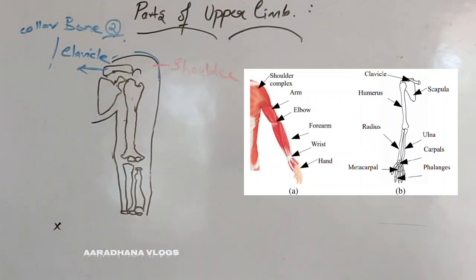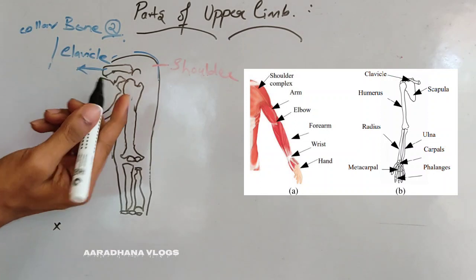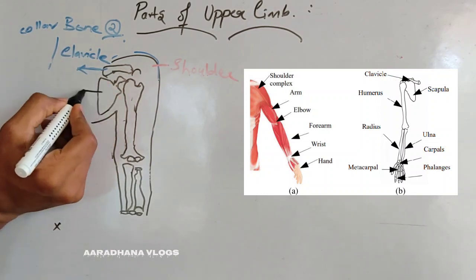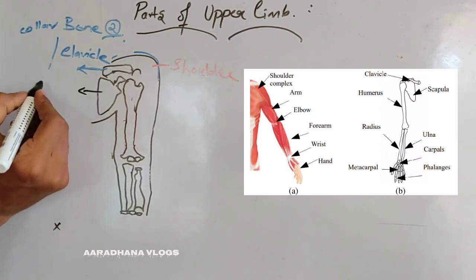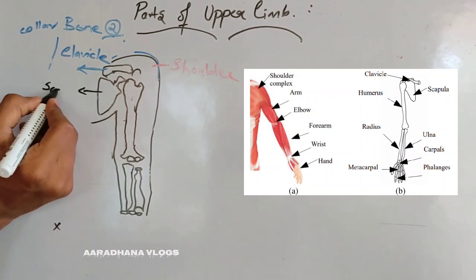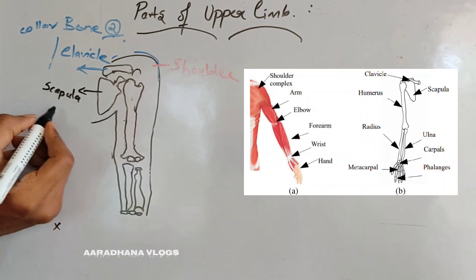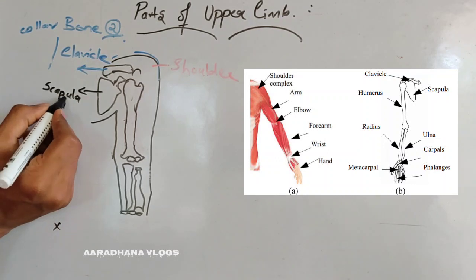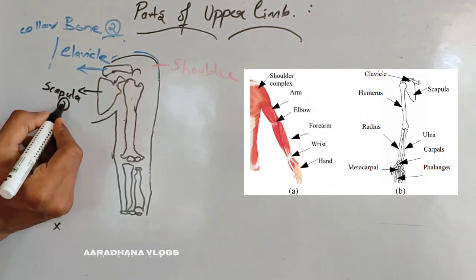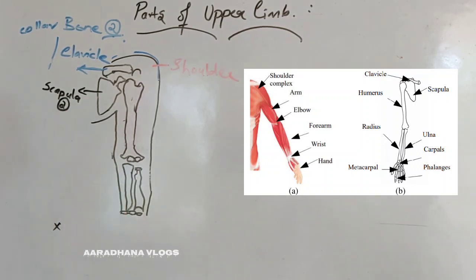Coming to the next bone, that is the scapula. Beneath the clavicle you can see the scapula. The scapula is also two in number, one on each side.